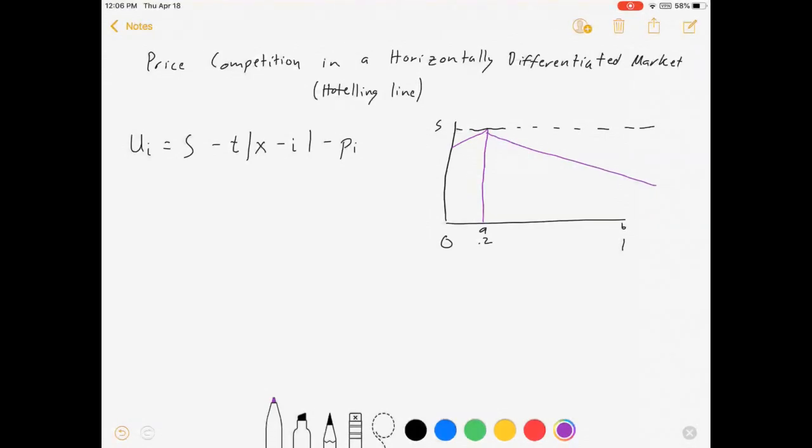I'll stop at one. You can pretend that's a straight line. Please bear with me. And then we can have firm B, consumers who are exactly on the one get the full level of S, and then the farther away from firm B they get, the less they're going to buy from B.